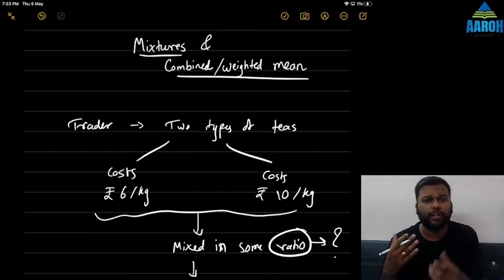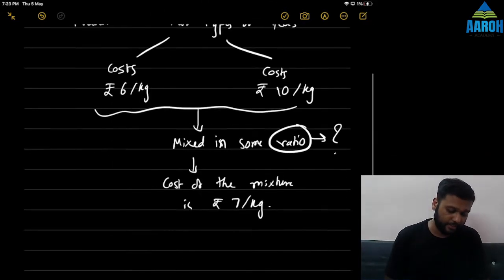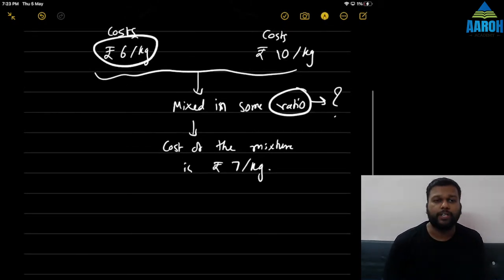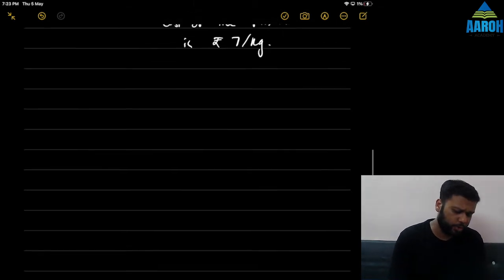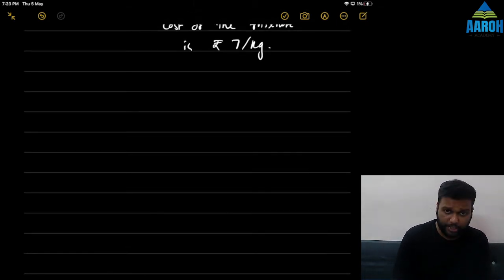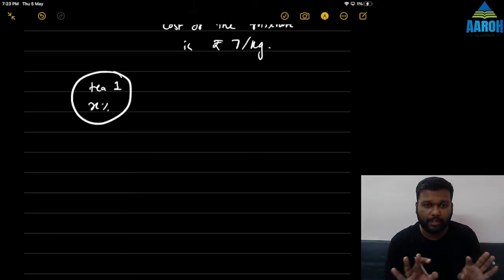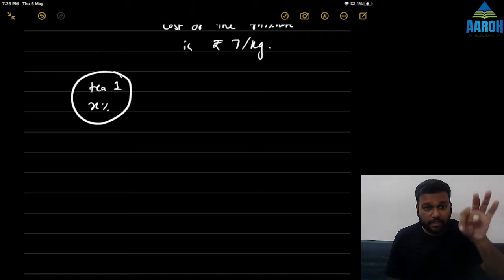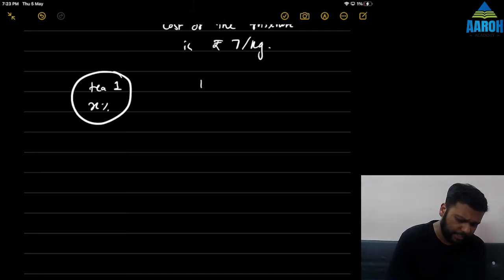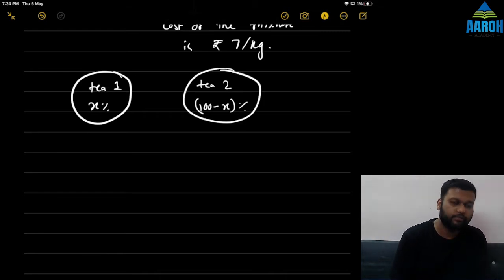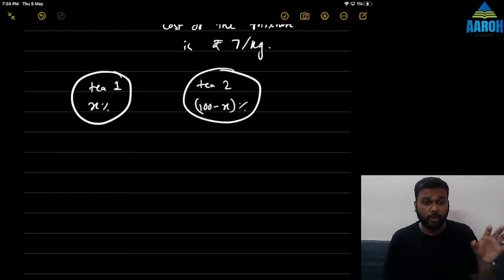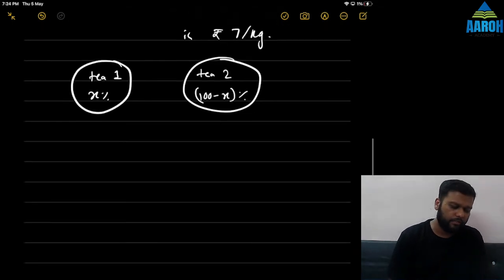One tea costs ₹6 rupees per kg. Let's assume x percent of the mixture is T1 and the remaining (100 minus x) percent is T2. Now if you want to use the long-cut formula, you solve it like that. T1 costing ₹6 is x percent of the mixture, plus T2 costing ₹10 is (100 − x) percent of the mixture, and the weighted average of this is ₹7.